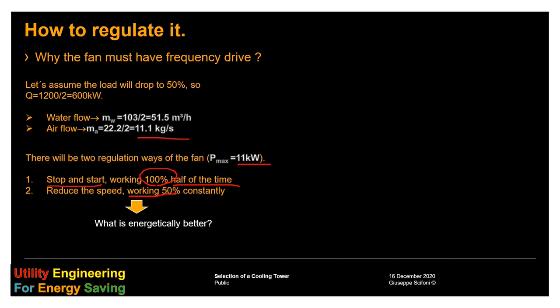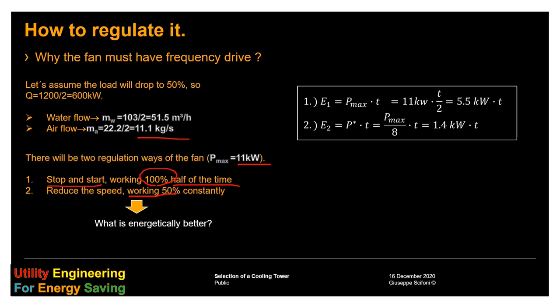What is energetically better? In the first case, the power is the maximum, but the time is the half. We get 5.5 kW times operational time. In the second case, the time will be the same, will be the full time, but the power is 1/8 of the maximum power. Eventually, we get 1.4 kW times operational time.